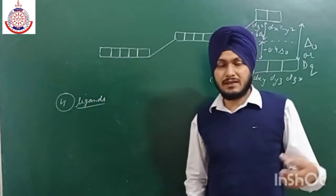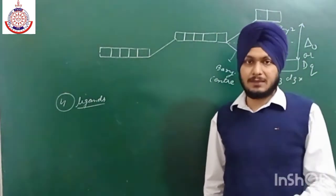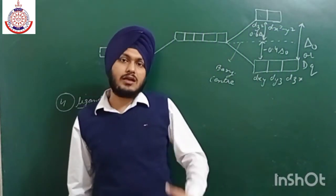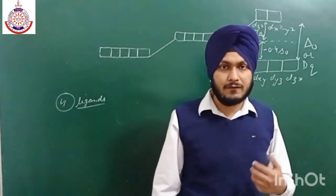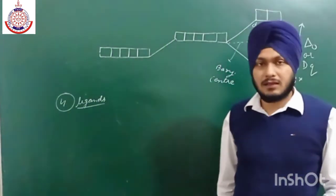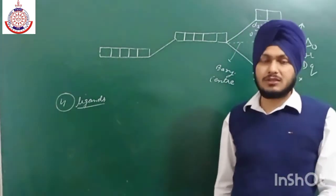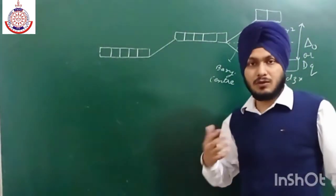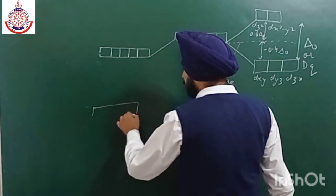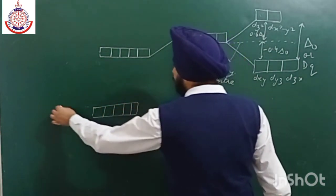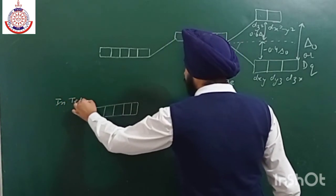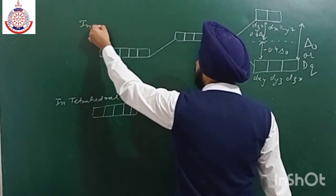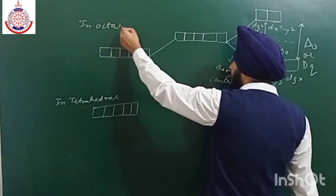In the tetrahedral case with four ligands approaching, it was found that when they approach in between the axis they feel less repulsion — which is opposite to the octahedral case. So the three orbitals that are in between the axis (dxy, dyz, dzx) feel more repulsion, while the two axial orbitals feel less. In tetrahedral, the diagram is opposite to octahedral.